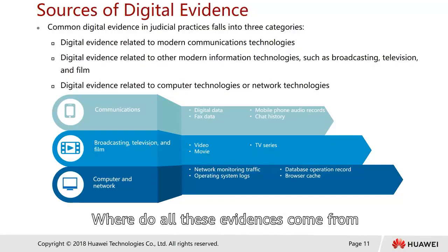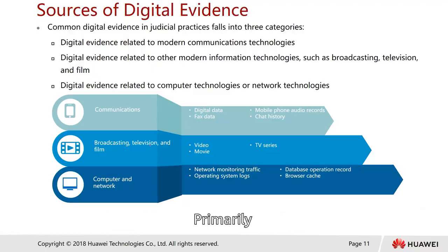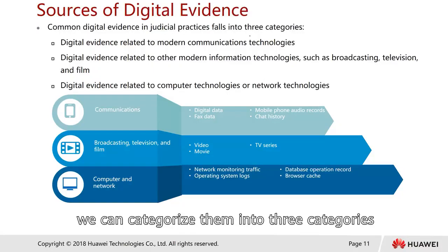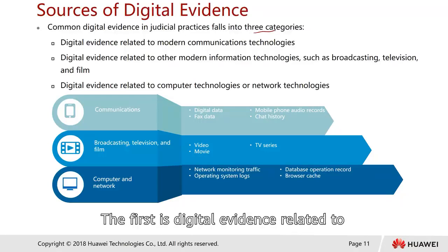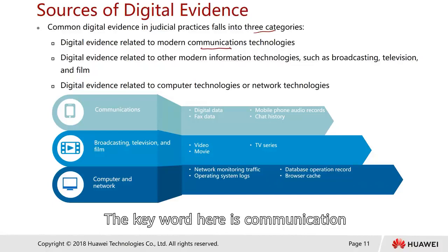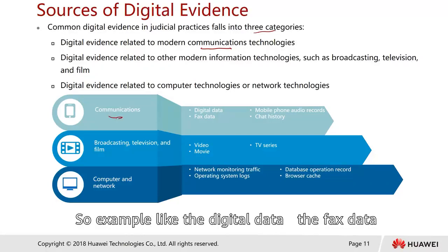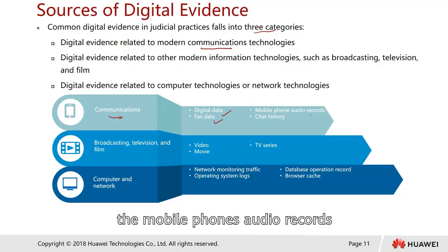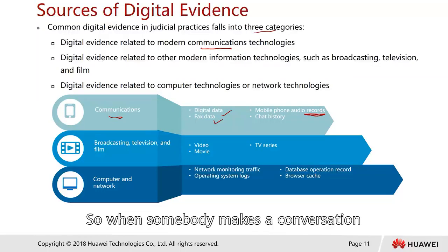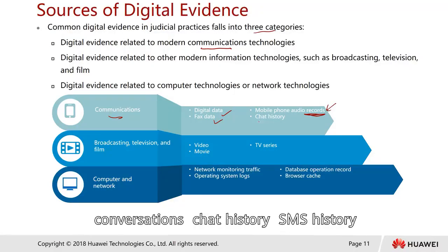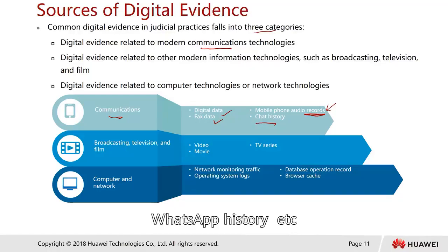Where does digital evidence come from? We can categorize into three categories. First, digital evidence related to modern communication technologies — for example, digital data from mobile phones, audio records, recorded conversations, chat history, SMS history, and WhatsApp history.